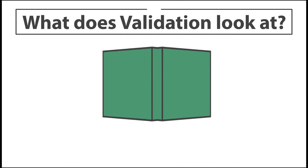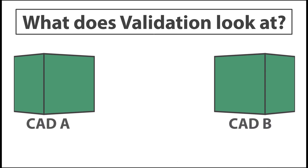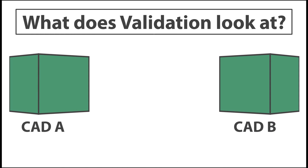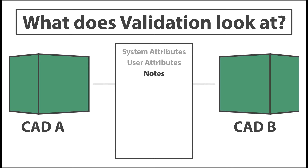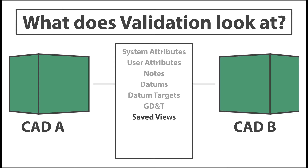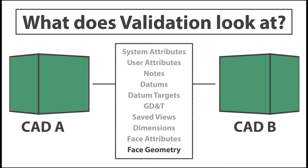What does validation look at? System attributes, user attributes, notes, datums, datum targets, GD&T, saved views, dimensions, face attributes, and face geometry.